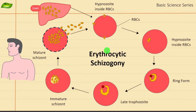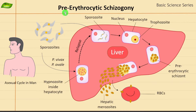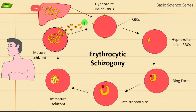Hello everyone, welcome to today's video. Today we will be understanding erythrocytic schizogony. If you have seen my previous video, we have already discussed the cycle called pre-erythrocytic schizogony in detail, where the sporozoites infect liver cells and then there is formation of hepatic merozoites. I recommend you watch that video before watching this one. In this video we will be discussing erythrocytic schizogony in detail — the different stages of the malaria parasite inside human RBCs.